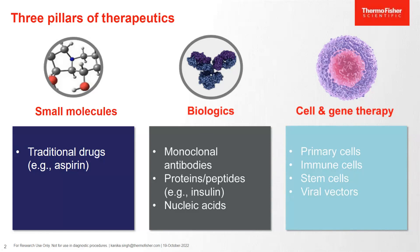The second pillar consists of biologics. A biopharmaceutical, also known as biologics, are drug products manufactured in, extracted from, or semi-synthesized from biological sources. They typically have biological functions, and examples are monoclonal antibodies, proteins and peptides like insulin, and nucleic acids which include DNA and RNA vaccines.